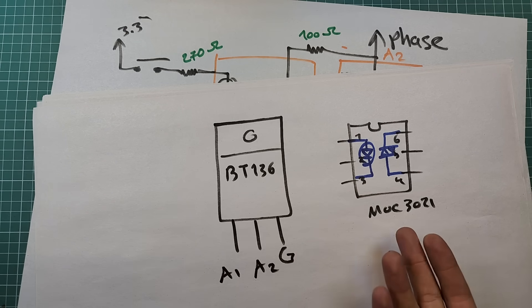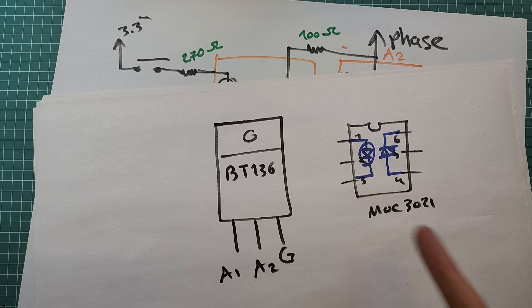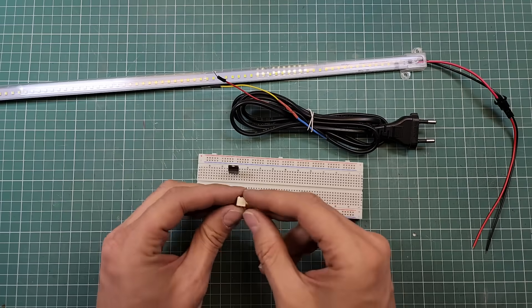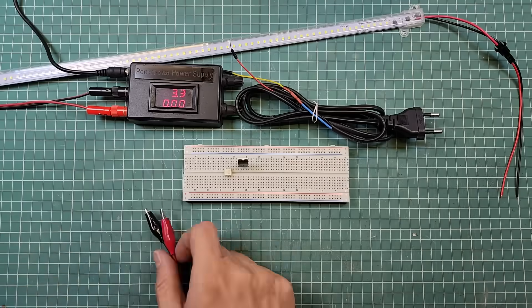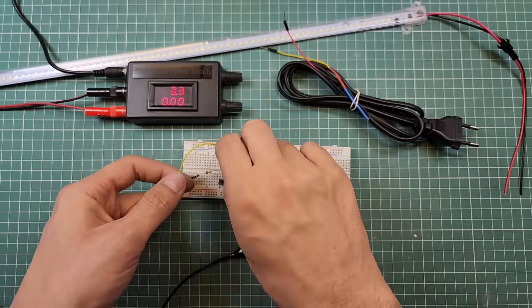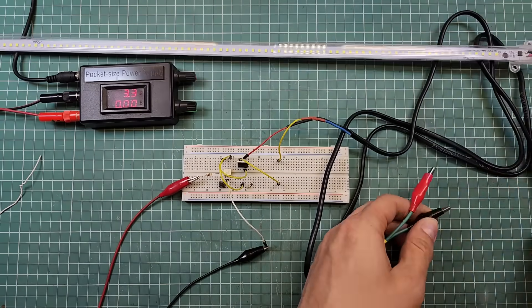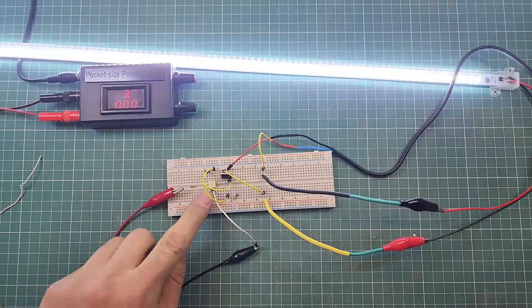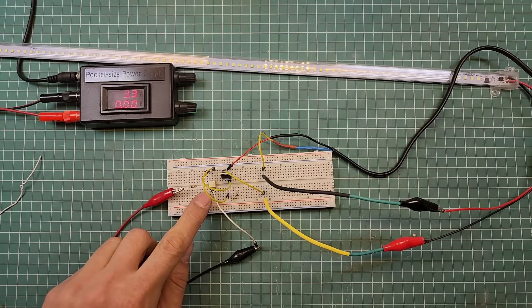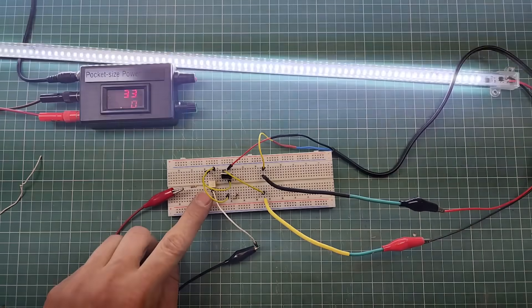In this experiment I'm using a BT-136 triac with its pinout and an MOC3021 opto-triac with its pinout. When I press the button this LED strip turns on, and when I release the button the strip turns off.